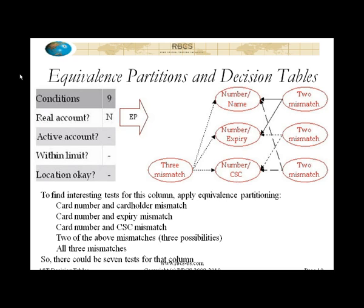So, we can say that there are three sort of fundamental equivalence partitions for the not real account, and do not involve combinations. That's the number name combination is wrong, number expiry date combination is wrong, number card security code combination is wrong. Just those by themselves. Everything else is fine, but those by themselves are not okay. So, boom, it's not a real account.